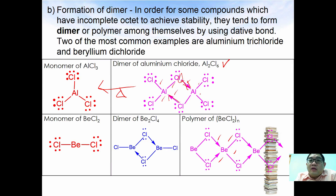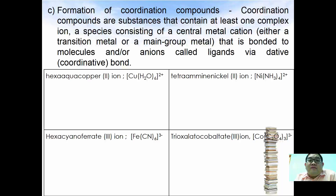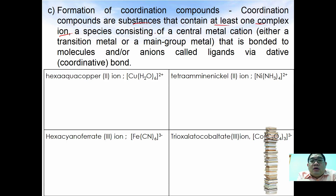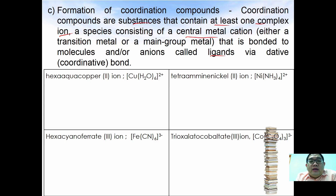These are the applications of dative bond in the formation of dimers and even polymers. Last but not least, dative bond is one of the most common bonds in the formation of complex ions or coordination compounds. A coordination compound contains at least one complex ion — a species consisting of a central metal ion, either a transition metal or main group metal, bonded to a molecule or ion called a ligand via dative bond.